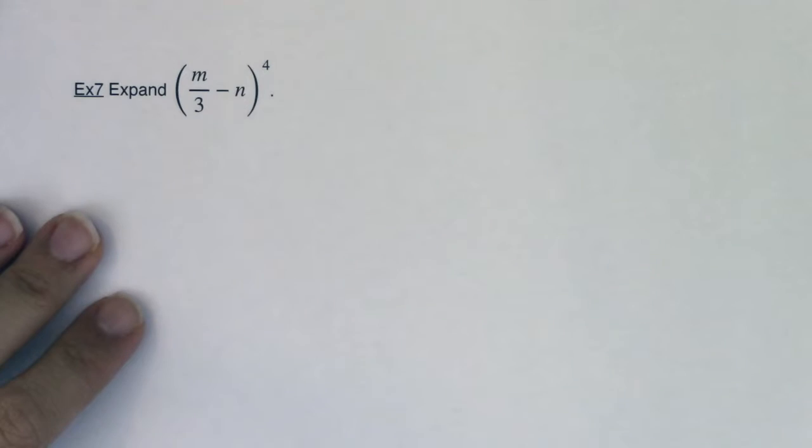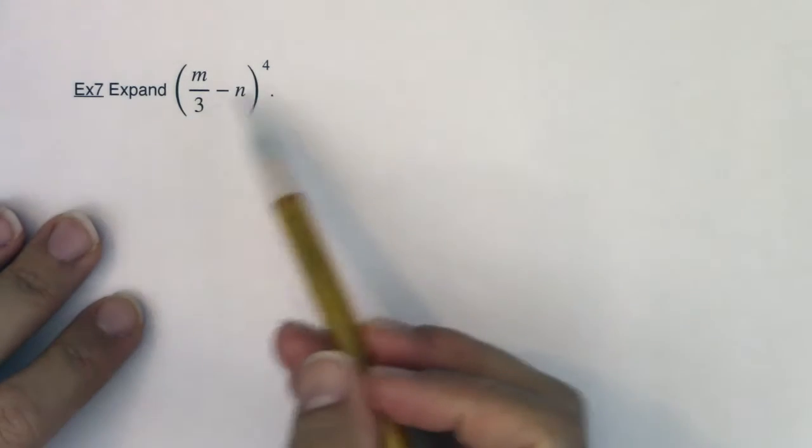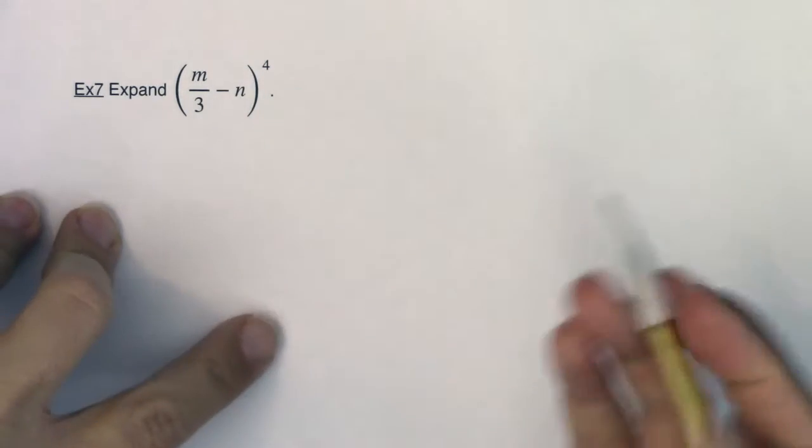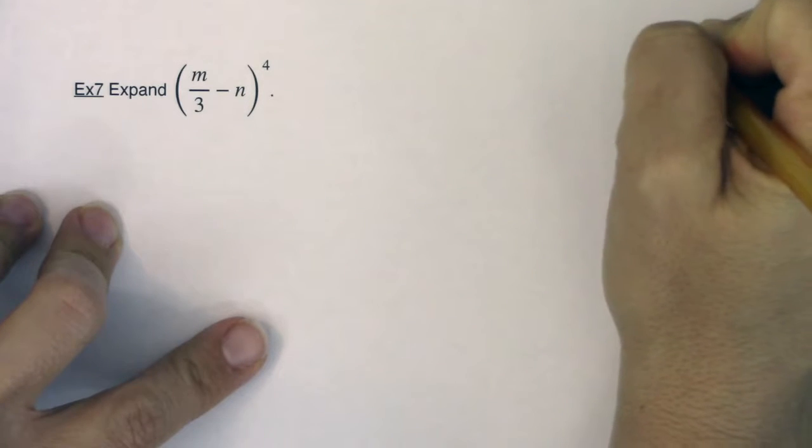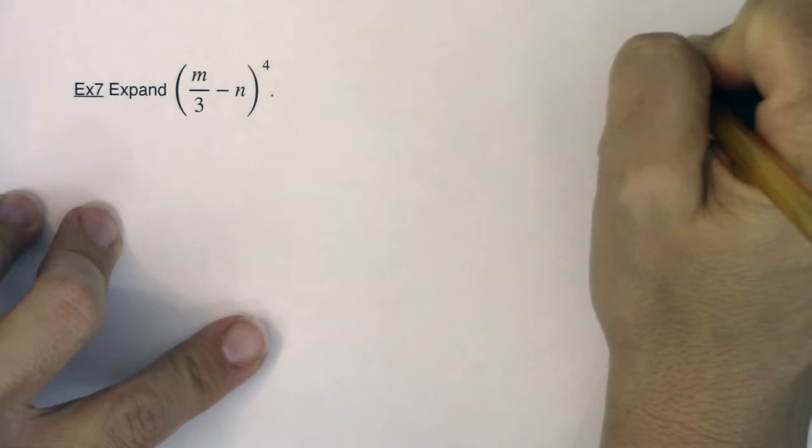Hey Mat31, welcome to example 4. We're going to expand this binomial. We've got a power of 4 here, or an exponent of 4, so let's take a look at Pascal's triangle.